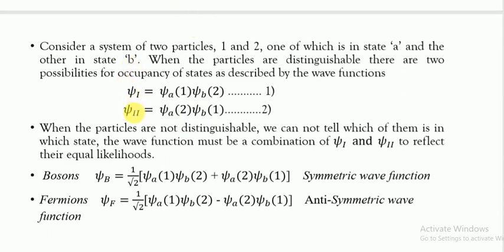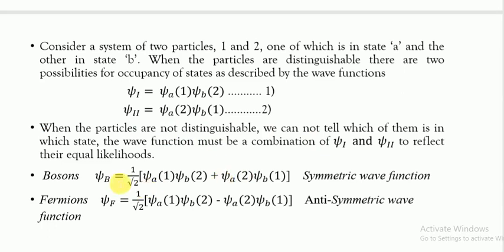If the particles are not distinguishable, for bosons we write the wave function as (1/√2)[psi_a(1)psi_b(2) + psi_a(2)psi_b(1)], and for fermions the same form but with a minus sign: (1/√2)[psi_a(1)psi_b(2) − psi_a(2)psi_b(1)]. The plus sign applies because the bosons wave function is not affected by exchange, making it symmetric, while the minus sign makes fermions anti-symmetric.